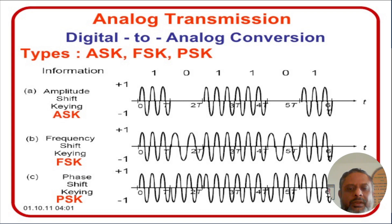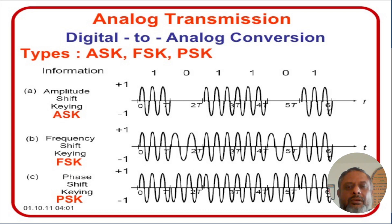Once we use phase, a whole world opens up. Instead of just two phases, we can have four phases, distributing 360 degrees into four parts of 90 degrees each, allowing us to transmit two bits at a time — this is called quadrature phase shift keying (QPSK). Similarly, using three bits at a time requires eight different phases, which we call 8PSK. Then 16PSK, 32PSK, and 64PSK are also possible. If we can accurately differentiate between phase changes, more than one bit can be transmitted simultaneously.